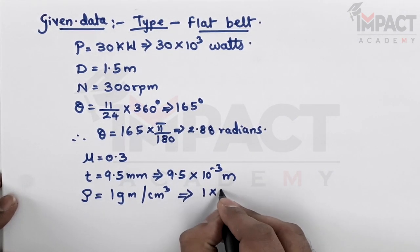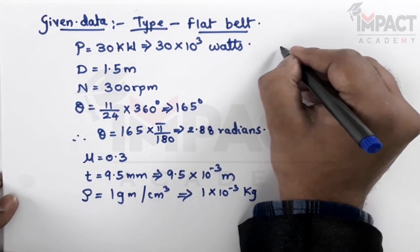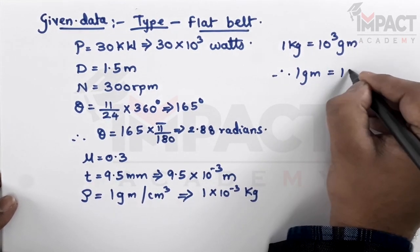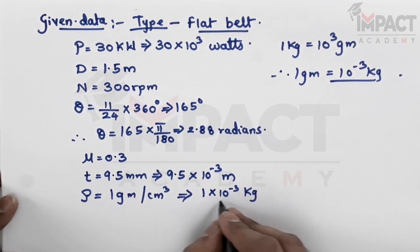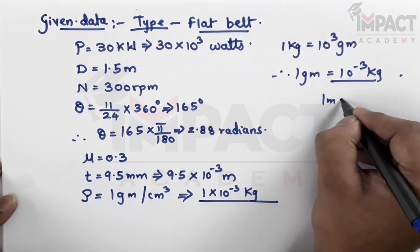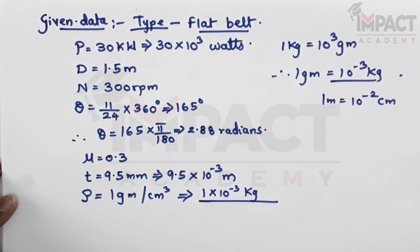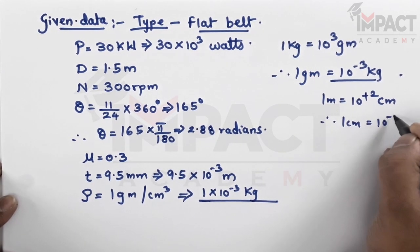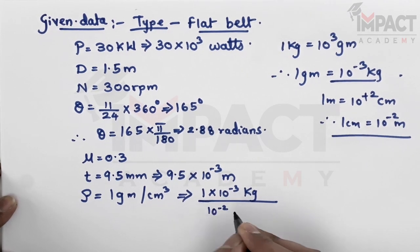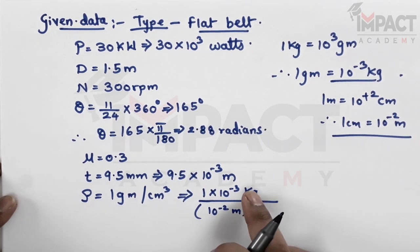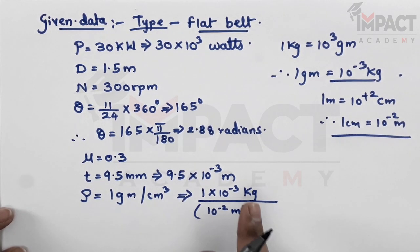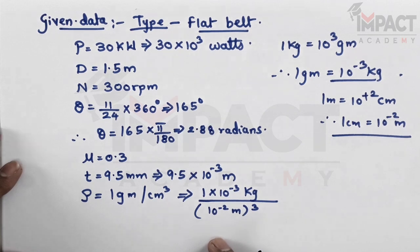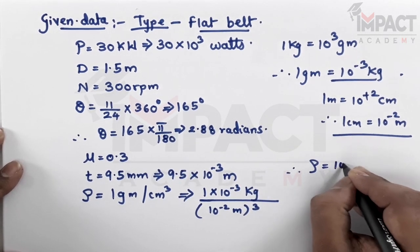To convert density: 1 gram is 10⁻³ kg, and 1 centimeter is 10⁻² meter, so 1 cm³ is (10⁻²)³ = 10⁻⁶ m³. Therefore, 1 g/cm³ = 10⁻³ kg / 10⁻⁶ m³ = 10³ kg/m³ = 1000 kg per meter cube.